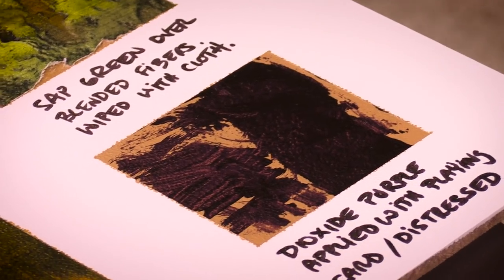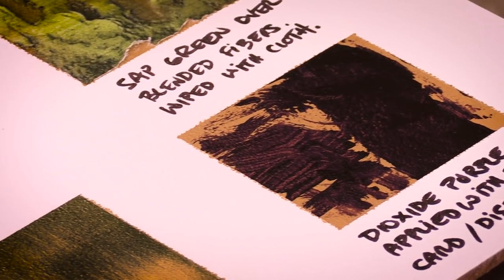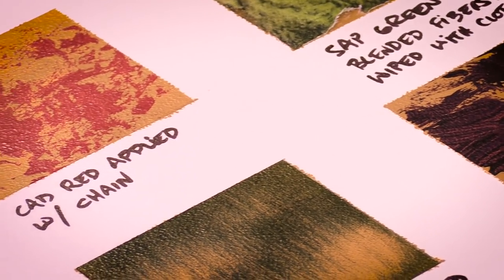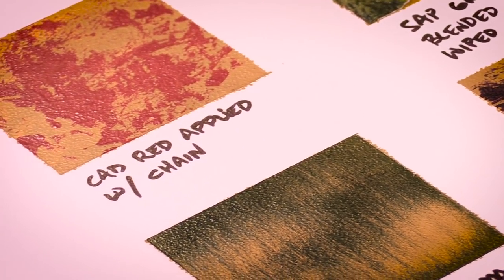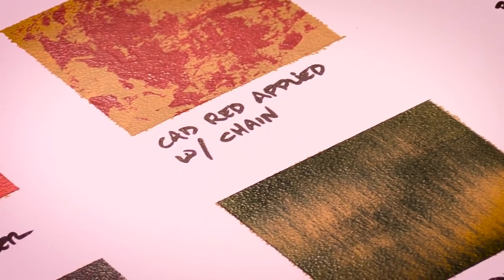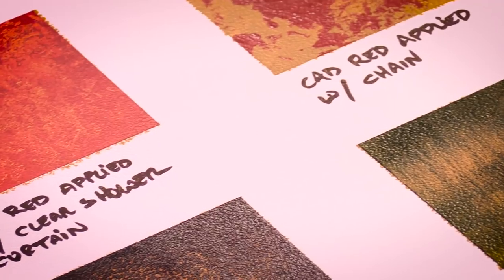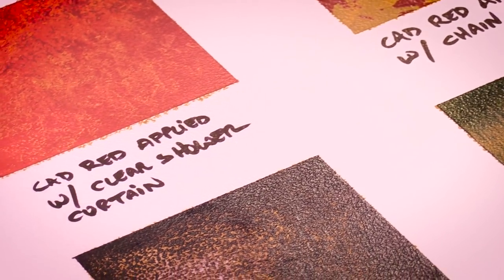To create my texture boards, I prepare a painting surface like I normally do. This just happens to be masonite. Then I use painter's tape to block off little square swatches. I do create texture boards using other surfaces like canvas, illustration board, and birch wood panel because I also paint on those surfaces.